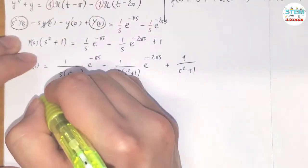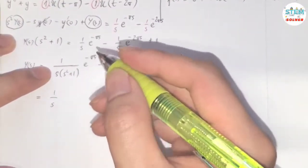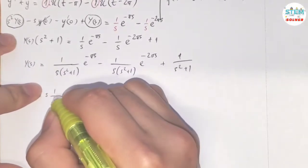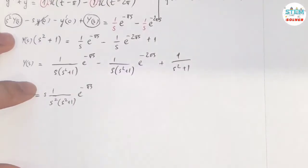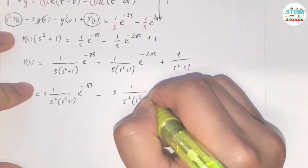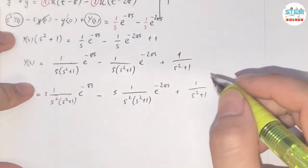So for this one I'm gonna have a set here. I'm going to multiply by s on top and on the bottom. So I have s·(1/s²)/(s²(s² + 1))e^(-πs). And do the same thing for this one. And rewrite this.